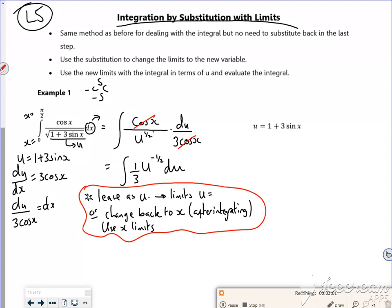So when x equals 0, from our limits, u is 1 plus 3 lots of the sine of nothing. Well, sine of nothing is nothing, so that's just going to be 1. So the lower limit will be 1.